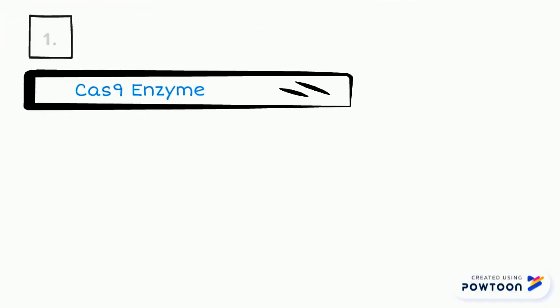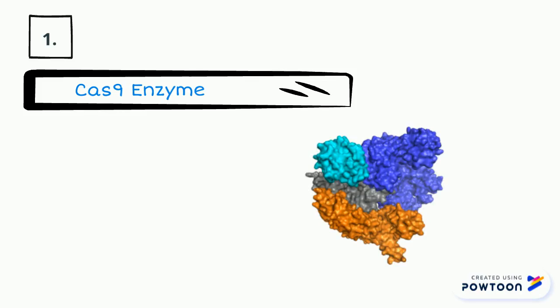So first, we have the Cas9 enzyme, which still functions as a molecular scissors. However, it only cuts one strand of DNA, as opposed to both strands.